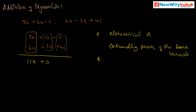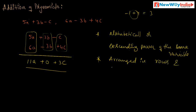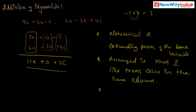For the third column, the like terms are minus c and plus 4c. The numerical coefficients are minus 1 plus 4 equals 3, so we get plus 3c. Therefore the sum of the two algebraic expressions is 11a plus 3c. The polynomials are arranged in rows, like terms occur in the same column, and then you combine the like terms column-wise to get the sum.